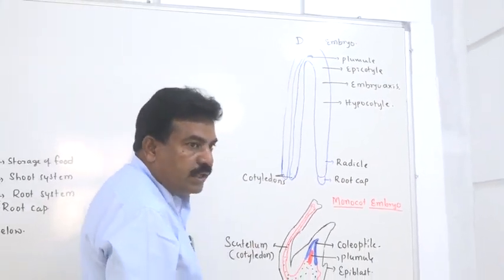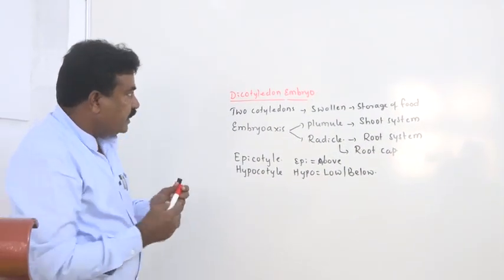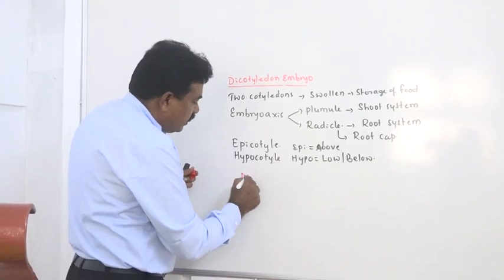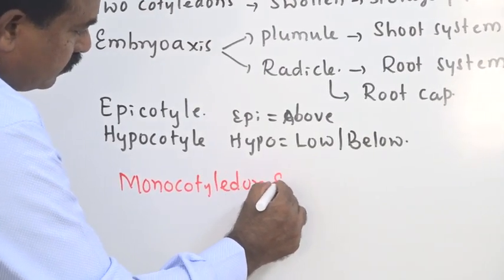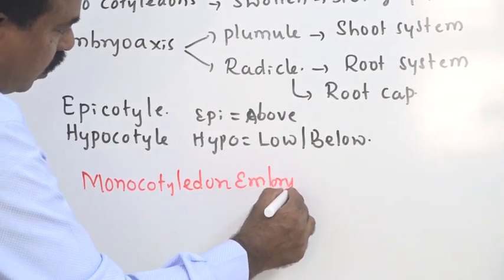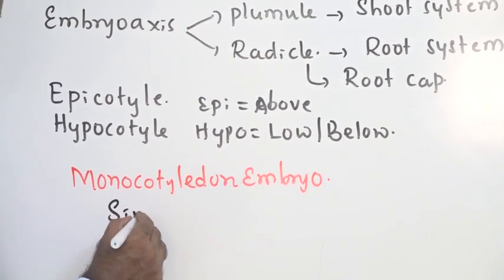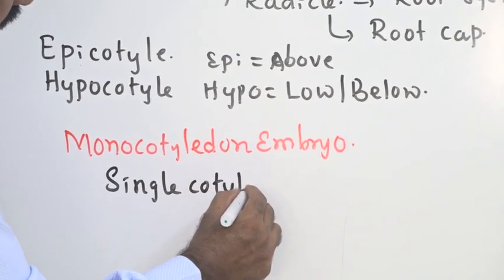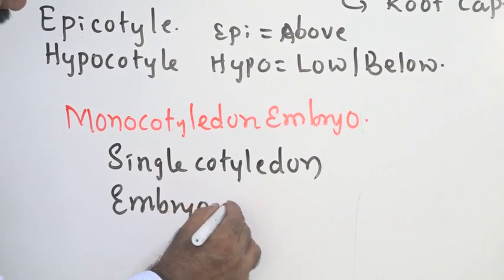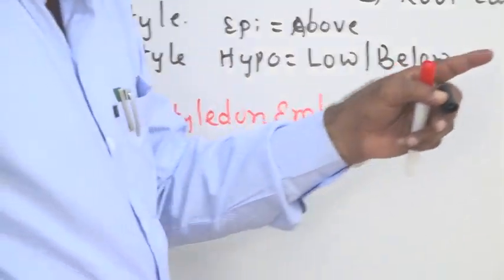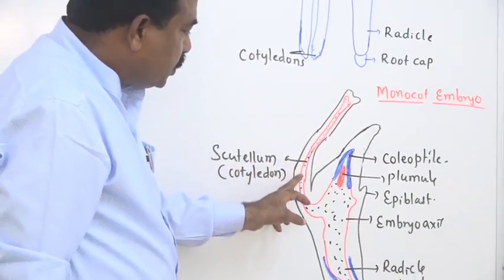For the monocot embryo, the name itself indicates that generally only one cotyledon is present — a single cotyledon — hence it is called monocot. It also has an embryo axis. In monocot embryo the single cotyledon stores food material.